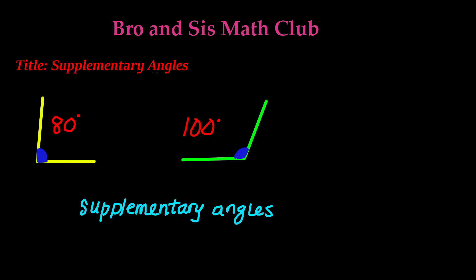So you have two different angles and they're both supplementary angles, and when you add their angle measurements together you should get 180 degrees. In this case we have these two supplementary angles and we know they're supplementary because when we add these measurements — 80 degrees plus 100 degrees — we get 180 degrees.